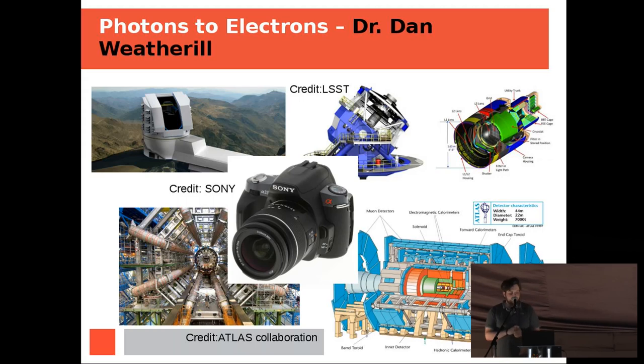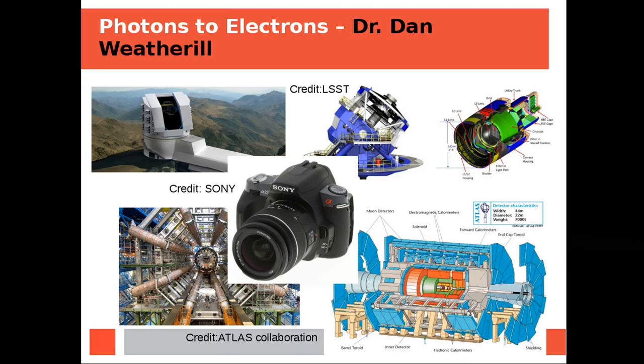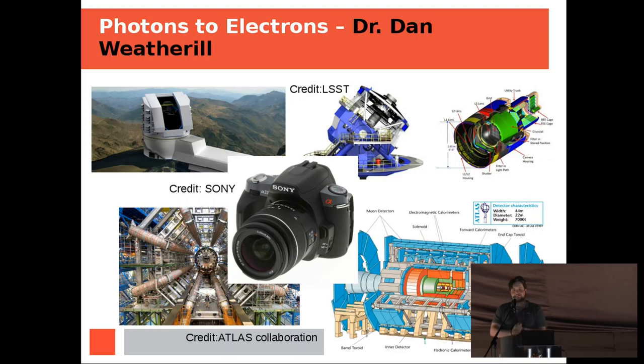On the bottom left there we have the Atlas detector at the LHC and CERN. And in the center we have the humble Sony DSLR. These devices look very different, and they look very different to the outsider as well. There is a middle ground that connects all these things, and that is that they are basically digital cameras for light made with silicon, and that's what I'm going to talk about, how those work.